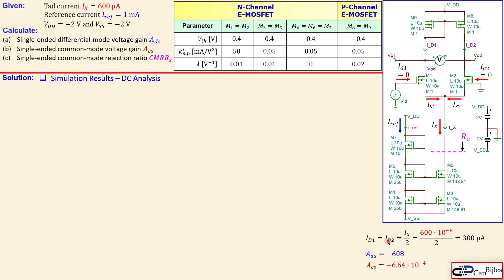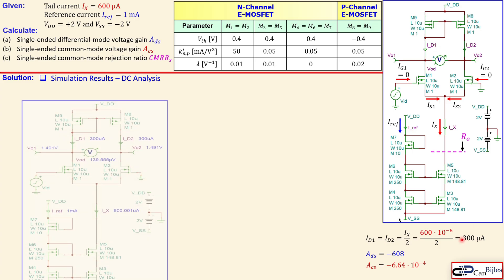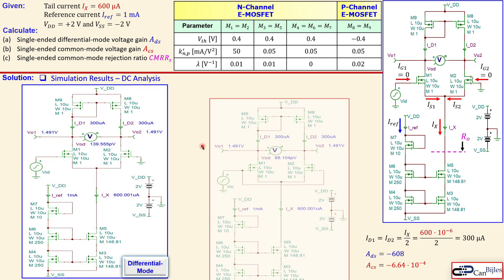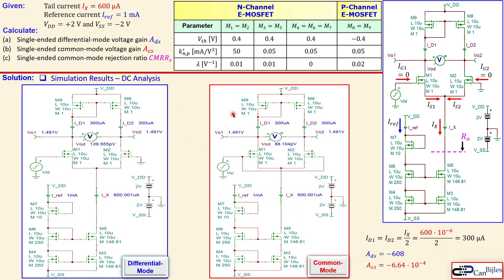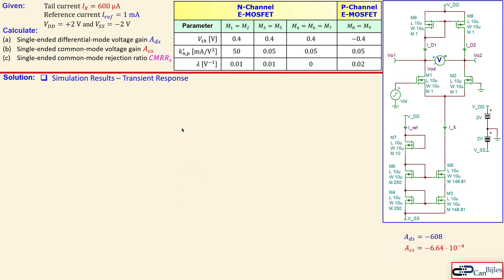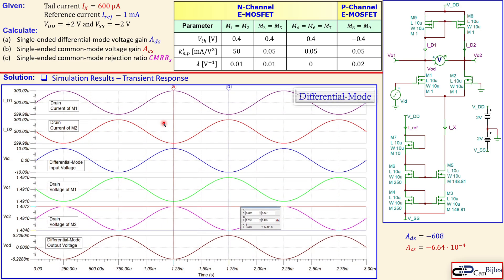Now let's look at the simulation results, starting with DC analysis. We expect ID1 = ID2 = 300 µA. The left side shows differential mode and the right side common mode. In both cases, I_RF = 1 mA and Ix = 600 µA are confirmed. ID1 and ID2 are exactly 300 µA in both modes — DC analysis is verified.